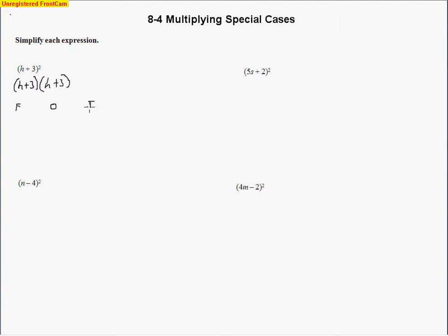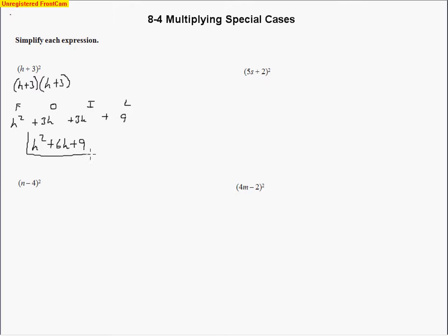We do the first, outer, inner, and last terms. Watch and see if you can find a pattern. h and h make h squared for the first terms. Outside terms are 3h. Inside terms are the same — h times 3 is 3h, and 3 times h is also 3h. And 3 times 3 makes 9. So h squared plus 6h plus 9 is the result of h plus 3 quantity squared.